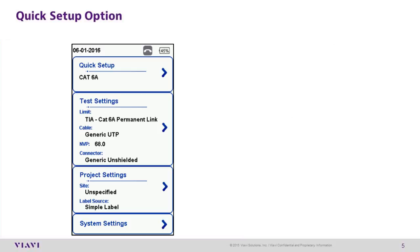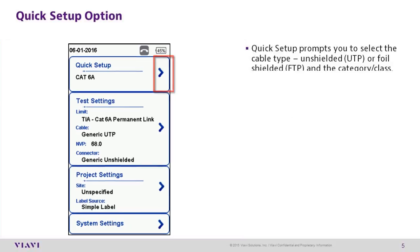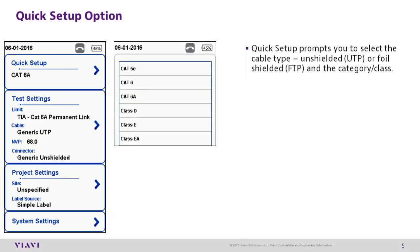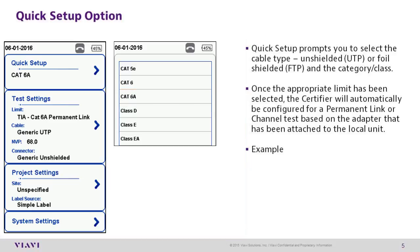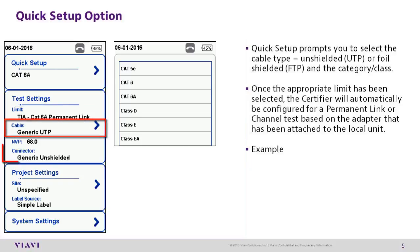Quick Setup Option. Quick Setup prompts you to select the cable type — Shielded, UTP, or Foil Shielded — and the category or class. Once the appropriate limits have been selected, the certifier will automatically be configured for a permanent link or channel test based on the adapter inserted into the local unit. In this example, CAT 6A was selected from the Quick Setup menu. Because the permanent link adapter was attached to the local unit, the Certifier 40G automatically set up for a Category 6A permanent link test using generic UTP cabling with a generic unshielded connector.